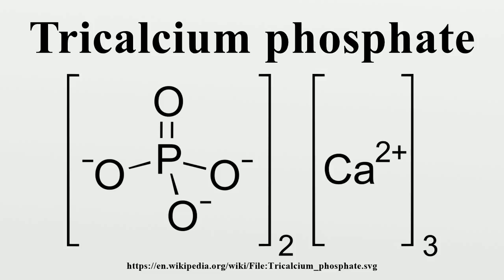Uses: Tri-calcium phosphate is used in powdered spices as an anti-caking agent and is also found in baby powder. Calcium phosphate is an important raw material for the production of phosphoric acid and fertilizers, for example in the Odda process. Phosphate quality and quantity is often specified as percent BPL, where 1% BPL is equivalent to 0.458% P2O5. Calcium phosphate is also a raising agent (E341) and is used in cheese products. It is also used as a nutritional supplement and occurs naturally in cow's milk.